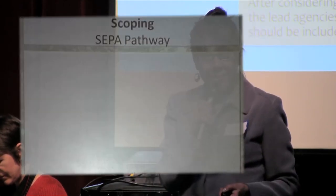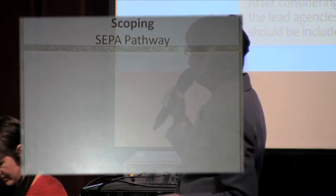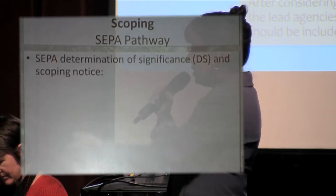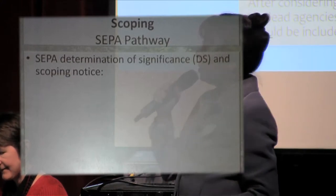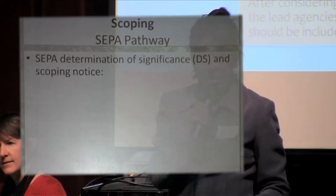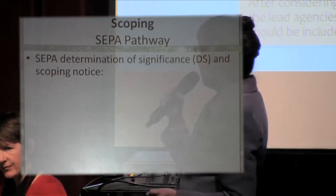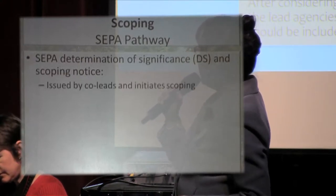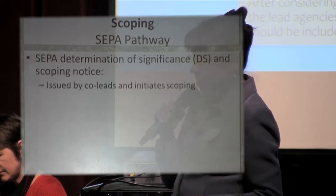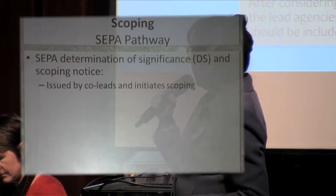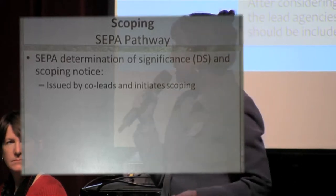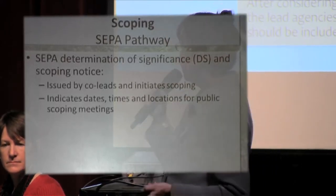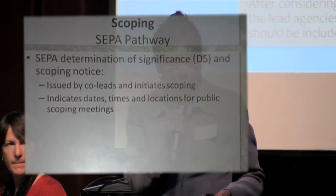The pathway for scoping: for SEPA, the county and Ecology will issue our Determination of Significance — a DS — and the scoping notice. It's issued by the co-leads, and that starts scoping. When that happens, we are going to indicate the dates, the times, and the locations for the public scoping meetings.